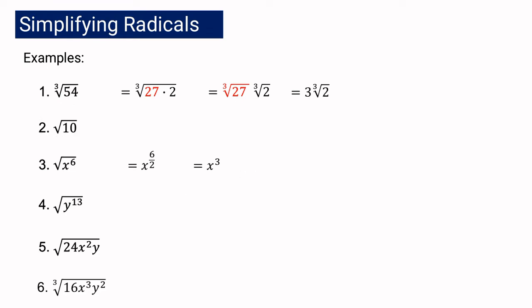Now, what if we have example number 4? We have the square root of y raised to the 13th. 13 is still greater than the index 2, so you still have to simplify. But the problem is that 13 is not divisible by 2. So how are we going to simplify it?